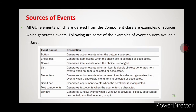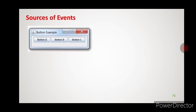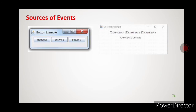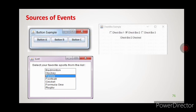Next is window — it generates window events. A window can be activated, deactivated, closed, or opened, and at those times window events will be generated. So window is also a type of event source.